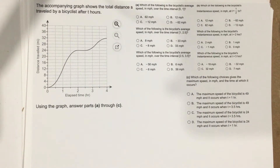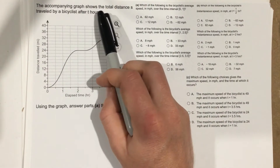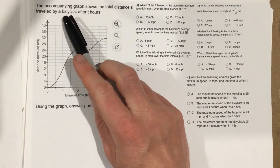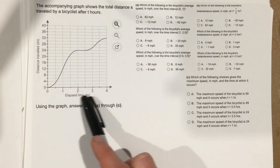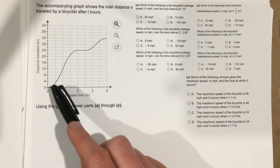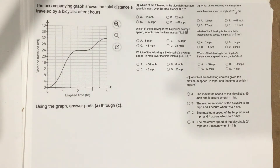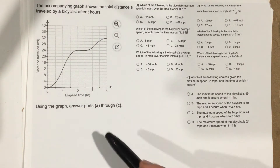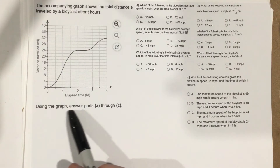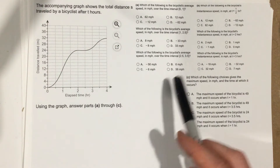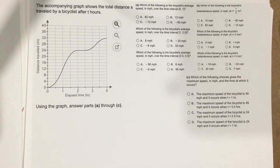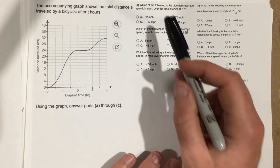This is problem number 8 from section 2.1. The problem says the accompanying graph shows the total distance S traveled by a bicyclist after T hours. We have hours on the x-axis going up to 4, and distance traveled on the y-axis. It asks us numerous things — using the graph, answer parts A through C, each with multiple questions. Let's use the graph to figure this out.